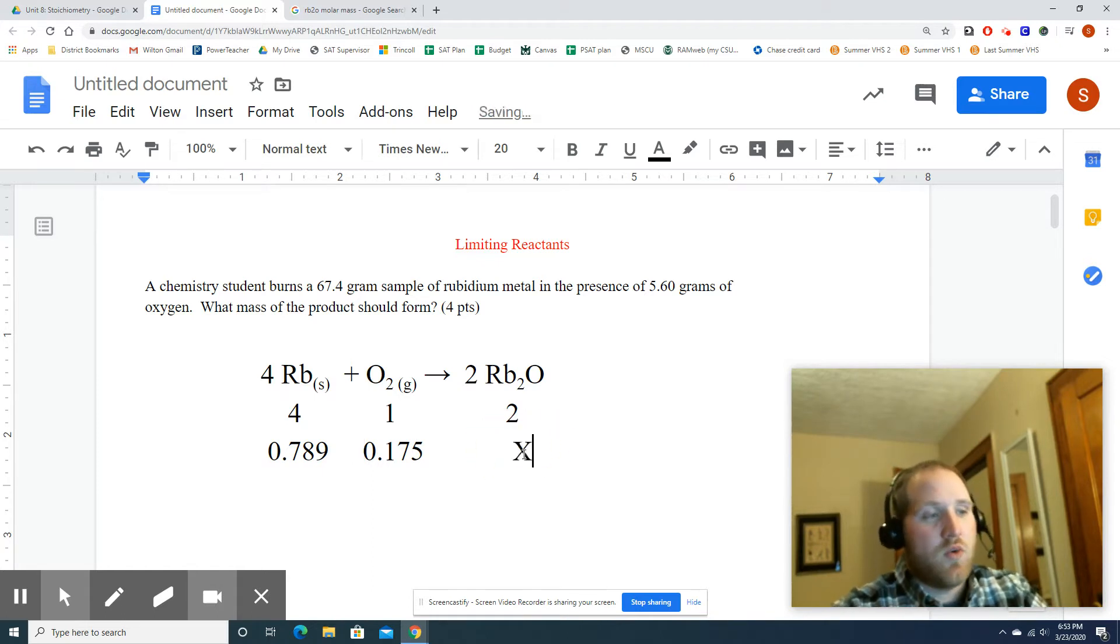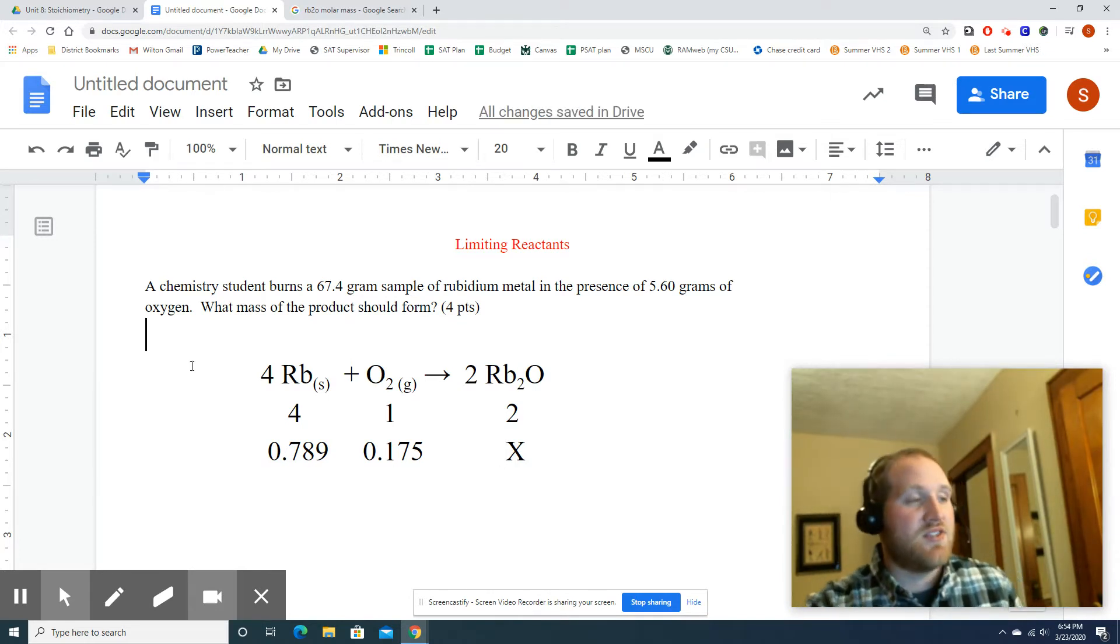0.175. So that's how many moles of each of my reactants I have. And then we need to know how much product we're going to get. So I put my X there. Now, you can't just pick your favorite reactant and use it. You can't just pick the one that gives you the easiest mole ratio. You have to find out which one's the limiting. You have to go with that one.